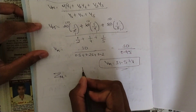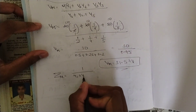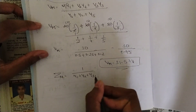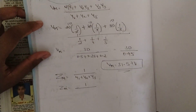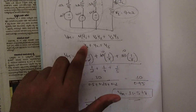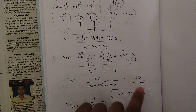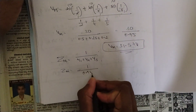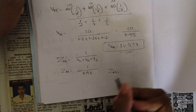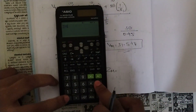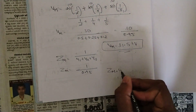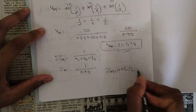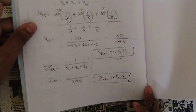Now we find the equivalent impedance ZM, which equals 1 divided by (Y1 + Y2 + Y3). The denominator was already solved as 0.95, so ZM = 1 / 0.95 ≈ 1.05 ohms. So we now have both VM and ZM.